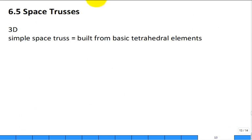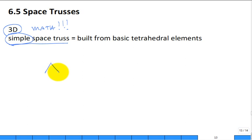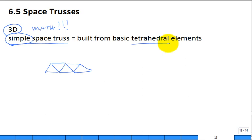Space trusses are 3D and require more math — unit vectors in 3D, more time consuming. Just as a simple 2D truss is built on triangles (stable), a simple space truss is built on the three-dimensional tetrahedral element: four points forming a tetrahedron. Putting those together gives a very stable structure.